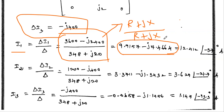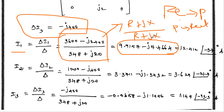Converting from rectangular to polar, the answer for i1 is 12.412∠-37° amps. A separate video on how to convert rectangular to polar and polar to rectangular is available, and the link is in the description box.